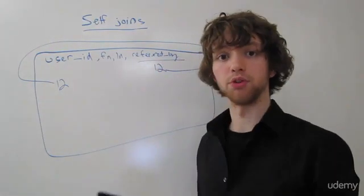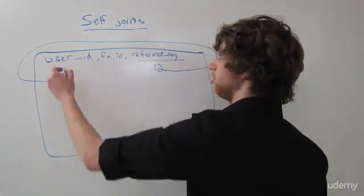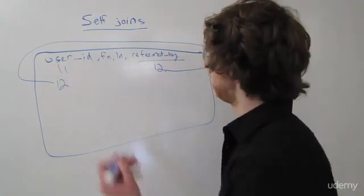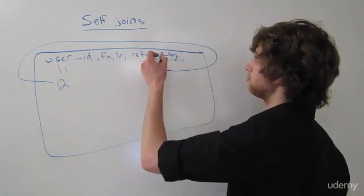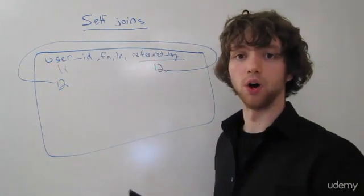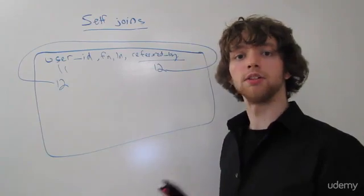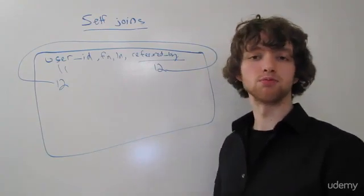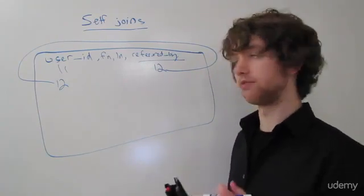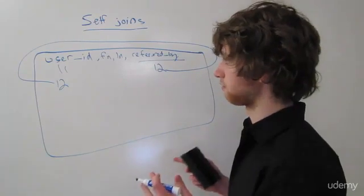This is actually a foreign key to the same table. So within here you're going to have numbers such as 12, which is going to point back to the user ID of 12. Now the only way that you can make this really work for a join is if you use a self-join.